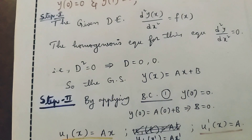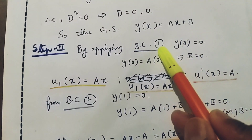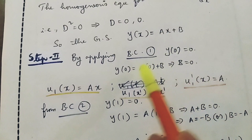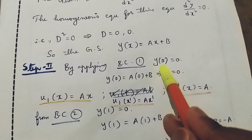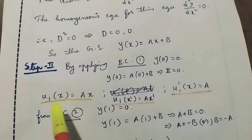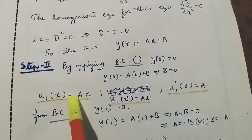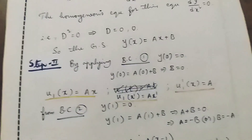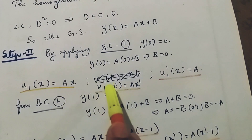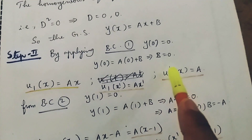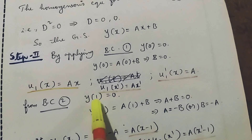Step two: applying boundary condition one, y of zero equal to zero. Substituting x equal to zero gives a times zero plus b equal to zero, which implies b equal to zero. Then u₁ of x equal to ax, and substituting x' in place of x gives u₁ of x' equal to ax'. Also u₁ dash of x equal to a.